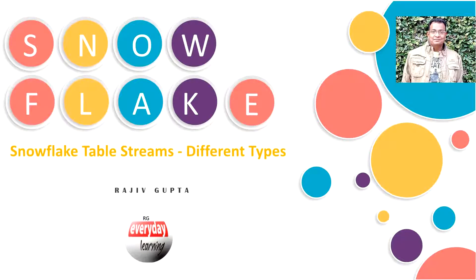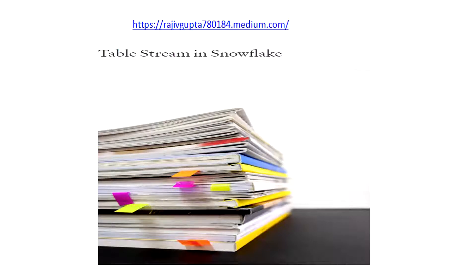Hi friends, today we are going to see a demo on Snowflake table streams and the different types of streams we have in Snowflake. If you have not seen my recent blog on Snowflake stream, I would suggest you to please have a look — I captured complete detail there. You can also find the blog link in my video description below. Before we start with the demo, let's understand briefly what a stream is: it is an object that captures the DML operations on a table, including metadata about the changes. This process is also known as change data capture.